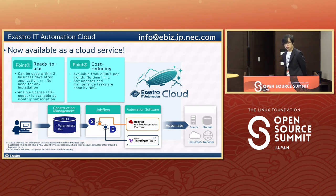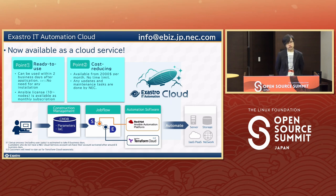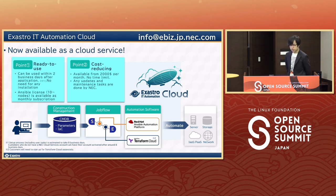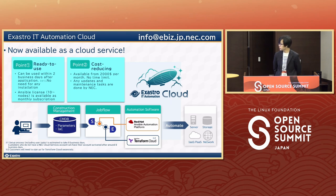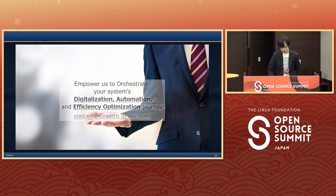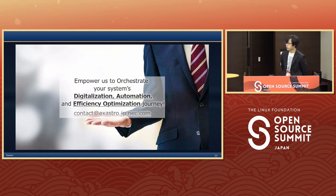I would also like to introduce Exastro IT Automation as a cloud service. It is now available through NEC. If you would like to skip the process of constructing the right environment and installing the software, NEC does provide ITA and Ansible as a ready-to-use package. It is available as a SaaS service, can be used within two days after application, and all updates and maintenance are done by NEC. If this sounds interesting, you can send a mail to info@ebiz.jp.nec.com. And that concludes our presentation — thank you for your time, and we hope you enjoy the rest of the forum.